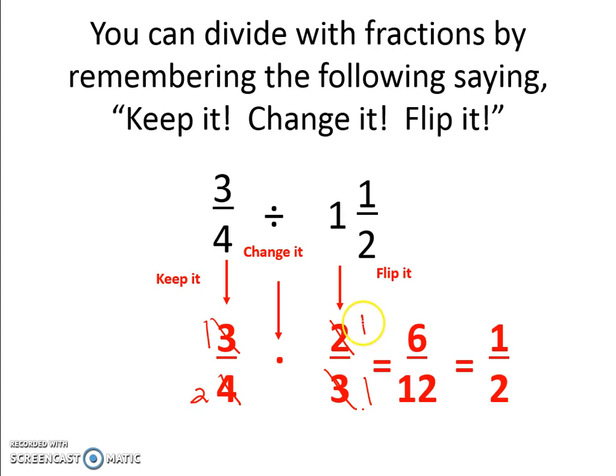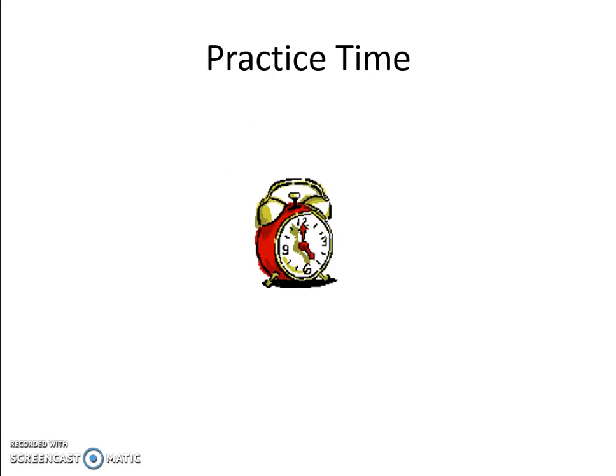Now let's look. If I simplified and did one times one, I would get one. And one times two is two. So I would get one half if I simplified first, or if I simplify in the end. So it doesn't really matter which way you do it.